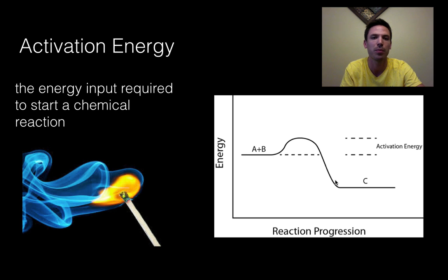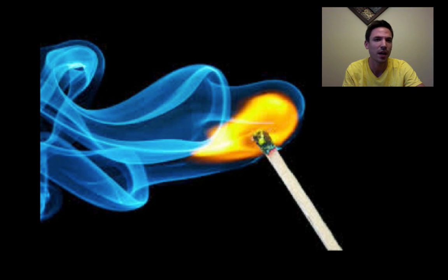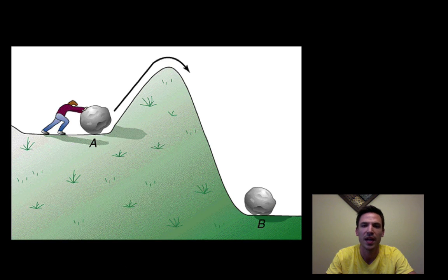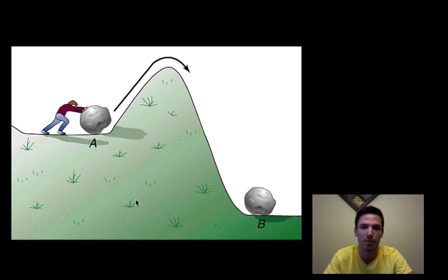Activation energy is the energy input required to start a chemical reaction. If you're having trouble thinking about this, just imagine a matchstick — it's a prime example. A matchstick is not going to spontaneously combust into flames; you have to strike it or input energy with friction to get that chemical reaction to take place. All chemical reactions require activation energy to start, and that's crucial when understanding enzymes. To picture this with an analogy: a guy is rolling a boulder and wants to get from point A to point B. In order to get from my reactants over to my products, he has to overcome this hill — the activation energy. He's got to put energy in.